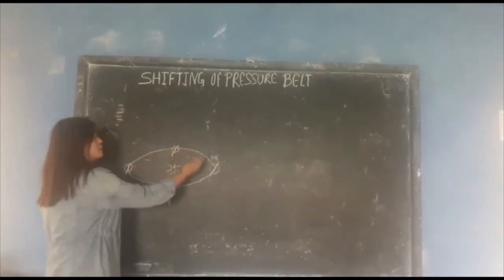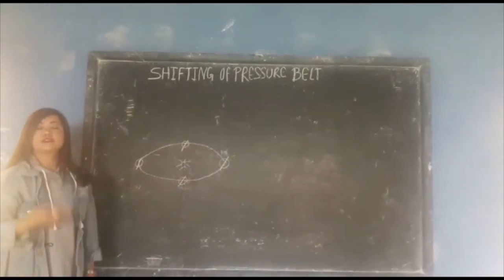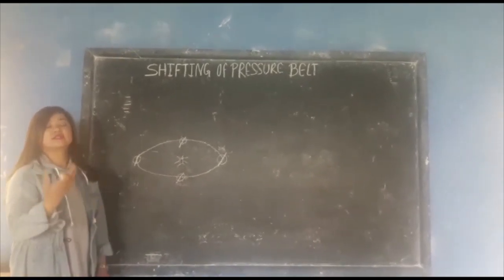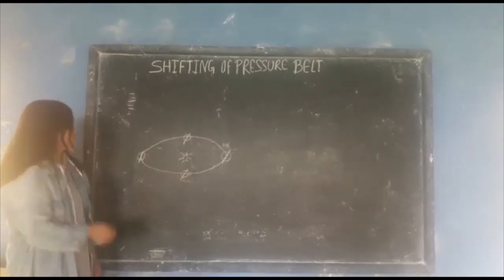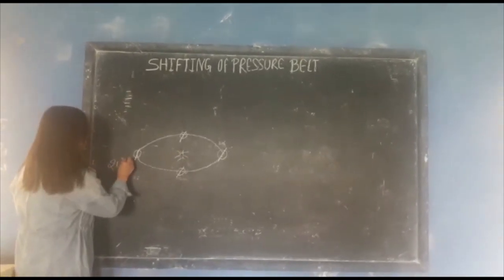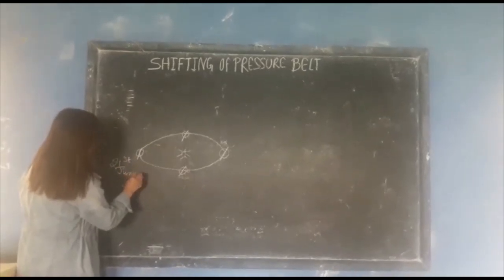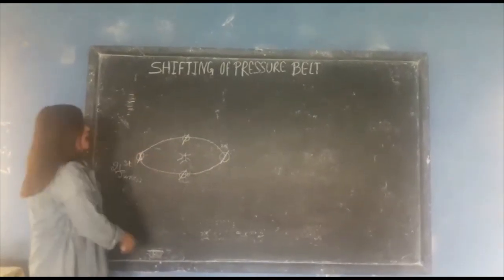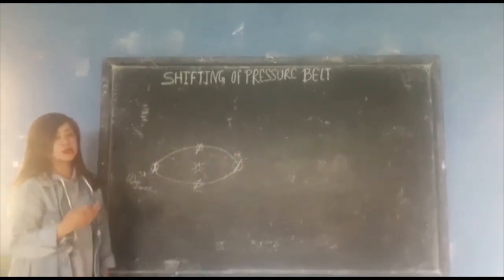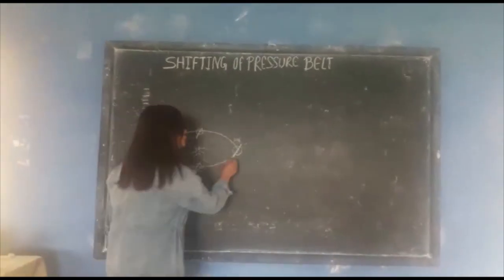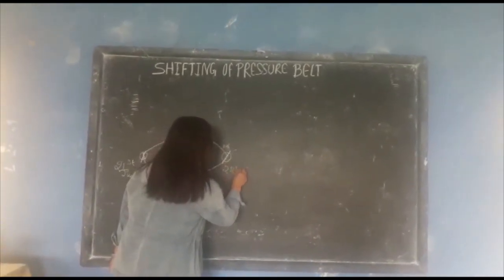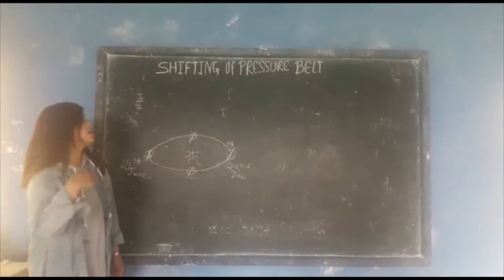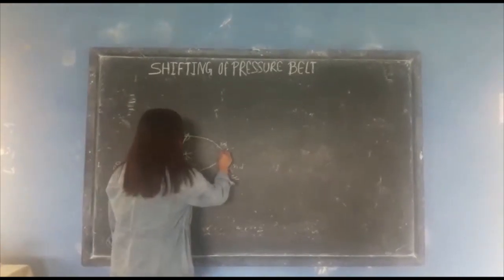Due to the inclined position of the Earth, sometimes the direct vertical rays of the sun fall on the Tropic of Cancer, sometimes on the Tropic of Capricorn, and sometimes on the Equator. On 21st June, direct vertical rays of the sun fall on the Tropic of Cancer, and this is known as Summer Solstice in the Northern Hemisphere. On 22nd December, direct vertical rays fall on the Tropic of Capricorn, and this is known as Winter Solstice in the Northern Hemisphere.